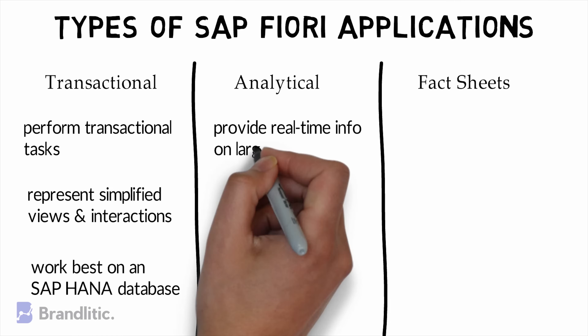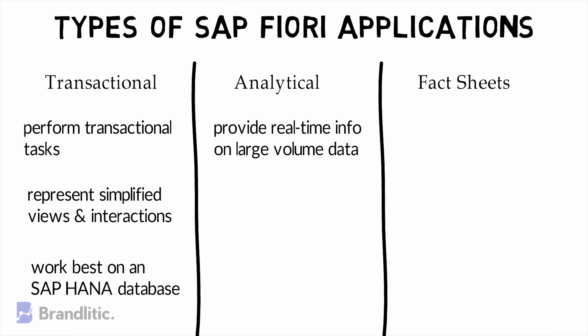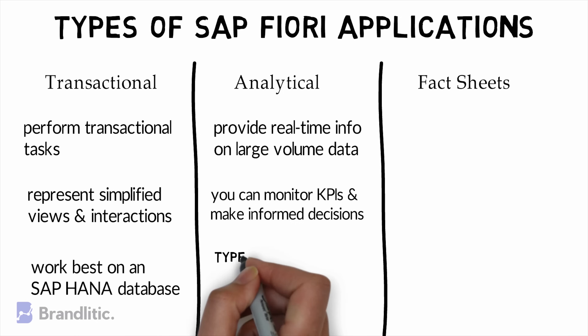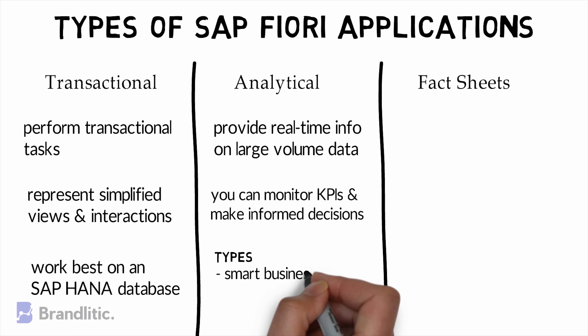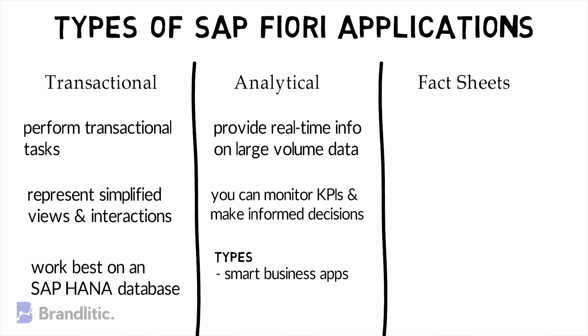Analytical Apps are mainly used to provide real-time information on large-volume data in a simplified front-end for enterprise control. With these, you can monitor key performance indicators and make more informed decisions for your organization. There are two types of analytical apps generally employed: Smart Business Apps, which are used to monitor the most important KPIs in real-time and to immediately make changes as per market conditions; and Virtual Data Model, which provides a way to process massive amounts of well-defined facts in HANA.